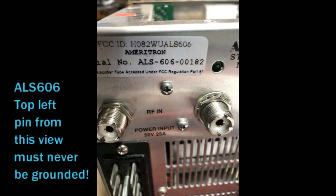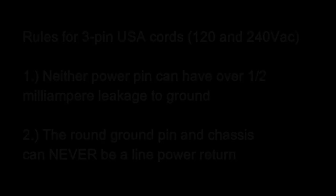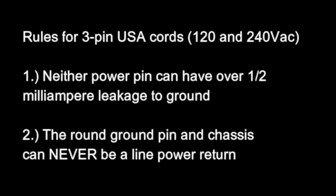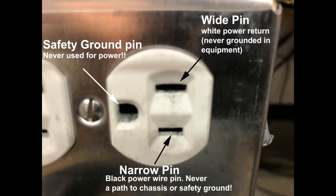The top connector pin from this rear view must never be grounded to the chassis. There are two critical rules using a 120 or 240 volt three wire circuit. Leakage from either line terminal of the chassis has to be less than a half a milliamp, and the round pin and chassis can never be used as a power line connection.